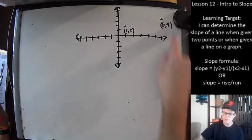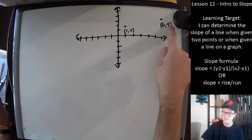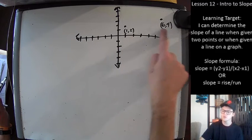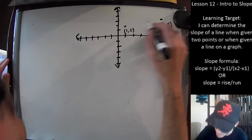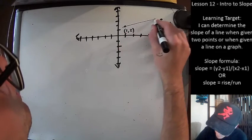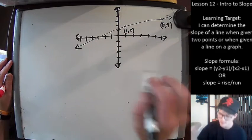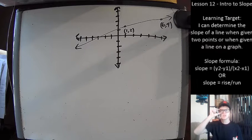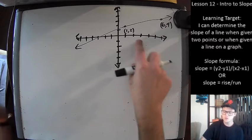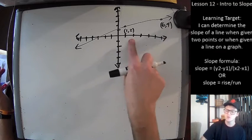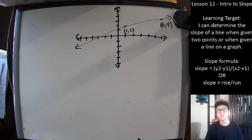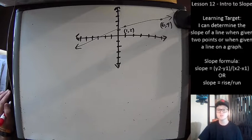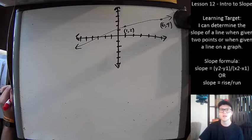Here's the second example. Say you have a graph with two points plotted: (1, 2) and (6, 4), with a perfectly straight line going through them. Your job is to figure out the slope of this line. You do have the coordinates, so you could use the same four steps we just did — but there's a quicker way when you're given a picture, and I'm going to show you that next.